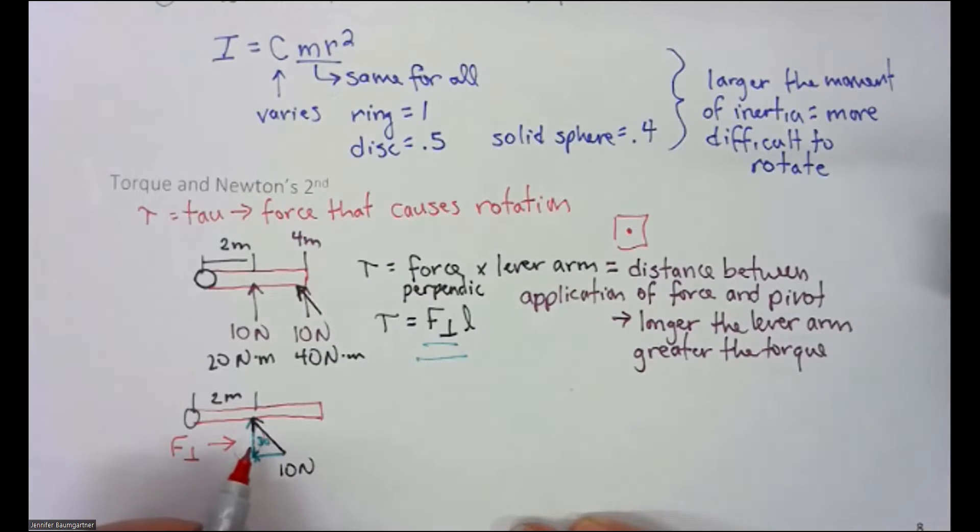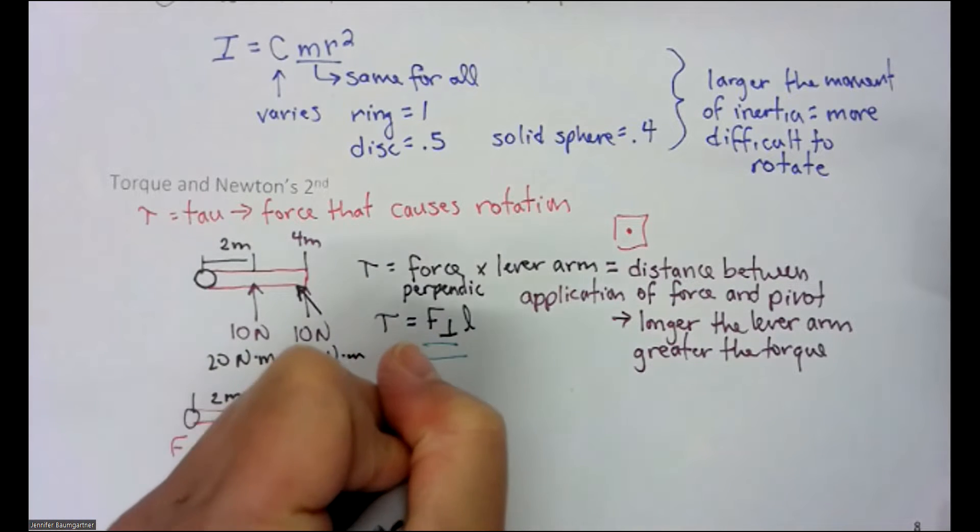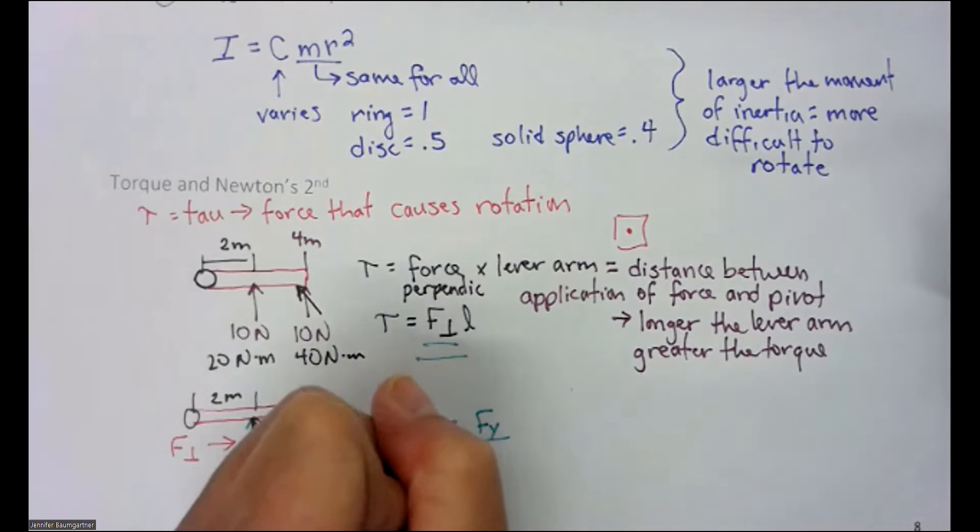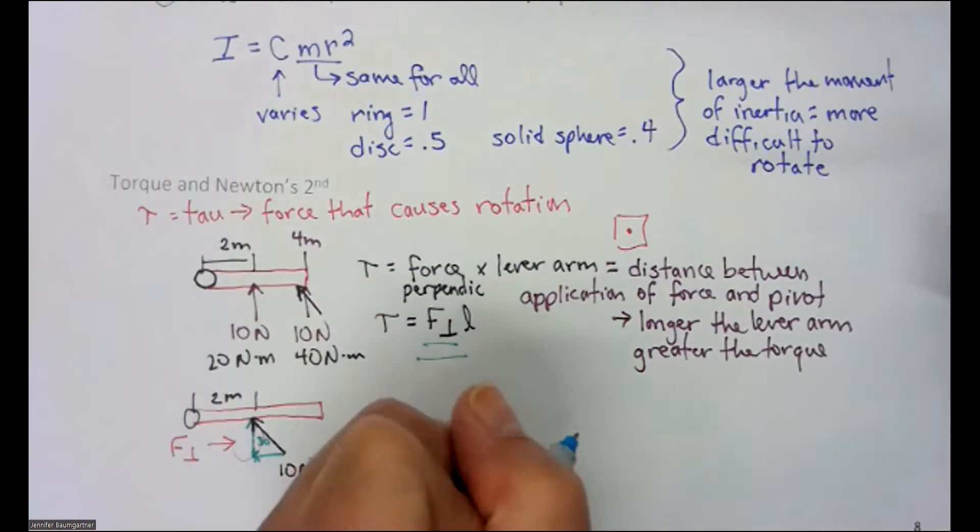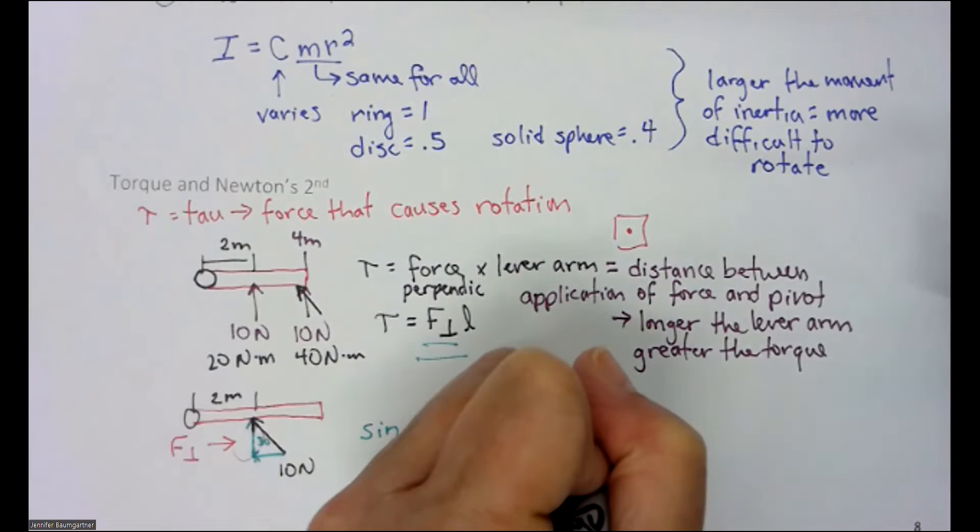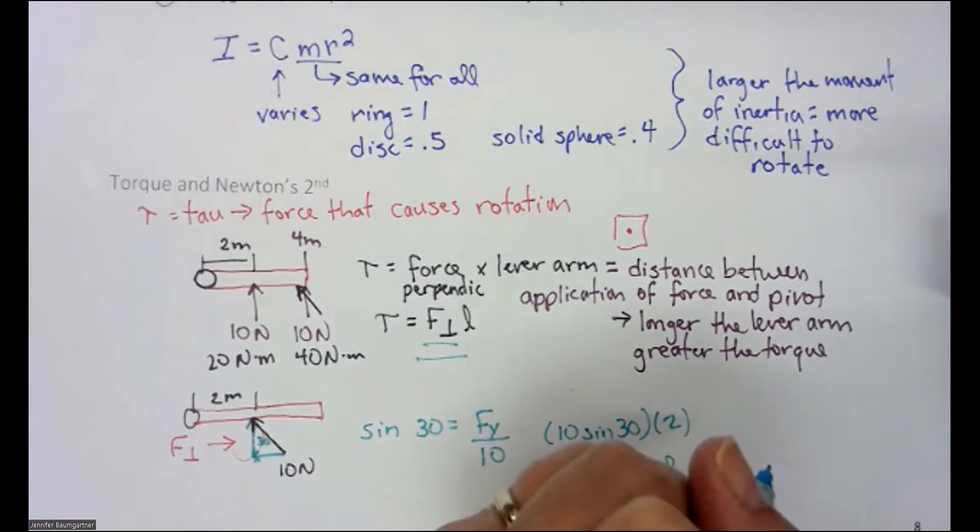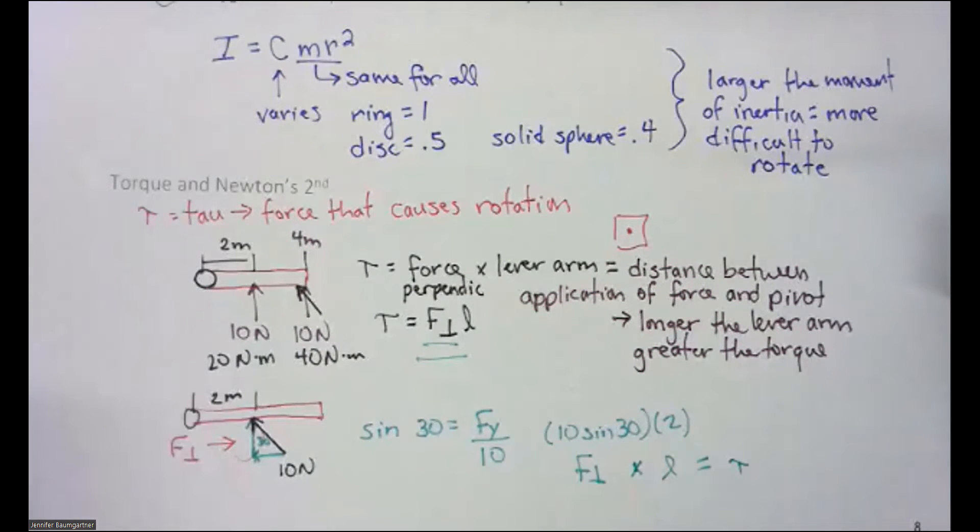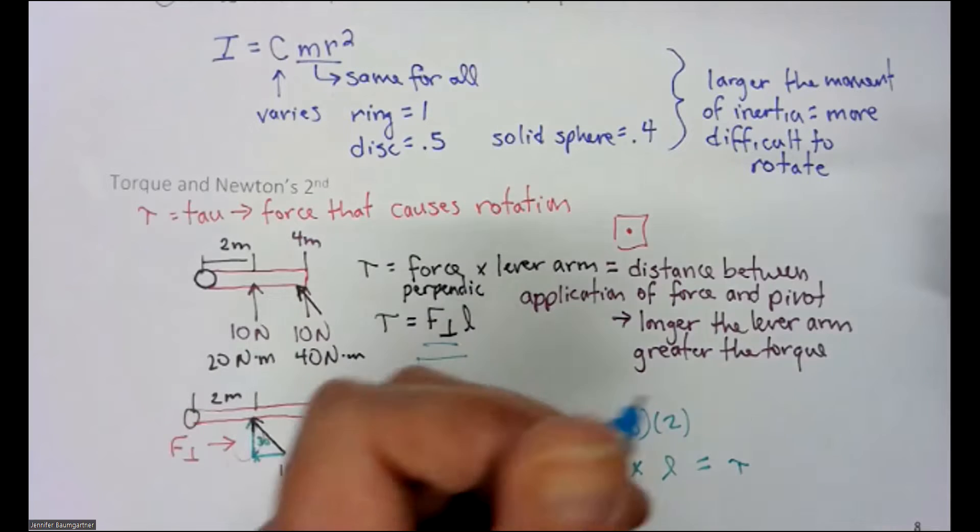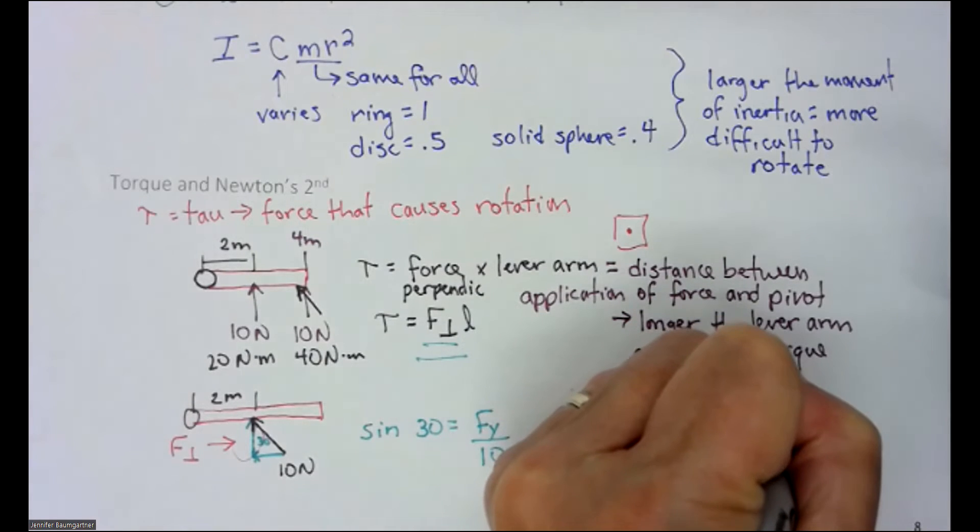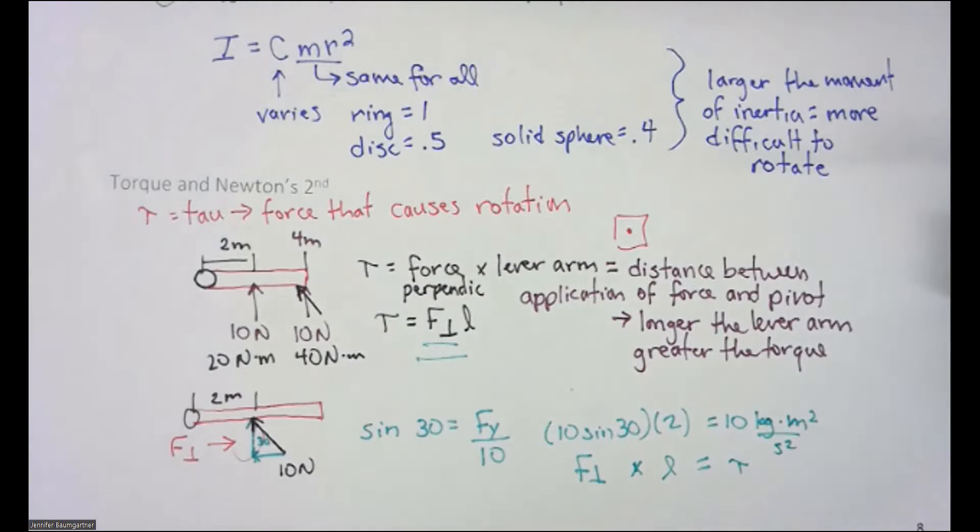So how do I find this value? Well, we've learned, we've done enough trig that we know if we take the sine of 30, that's going to be my vertical component over the hypotenuse, which is 10. And I'm going to have 10 sine of 30 as my force perpendicular. And then I'm going to multiply that by my lever arm of 2. And that's going to give me my torque. And actually, this ends up being 10 sine of 30 times 2 ends up being 10. And this is going to be kilogram meters squared over seconds squared, or it could be Newton meters. So it actually is half. So when I apply this 30 degree, I drop my torque from 20 down to 10.